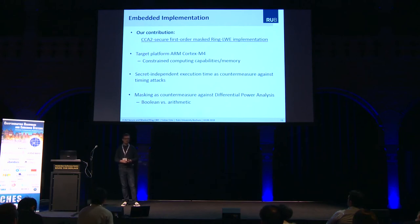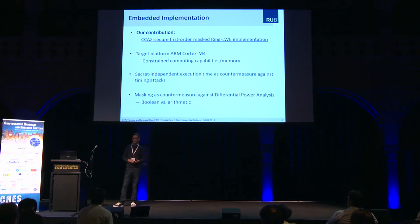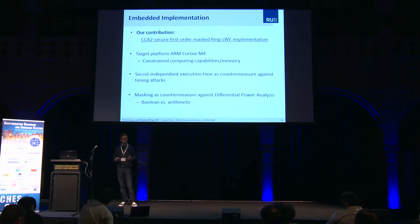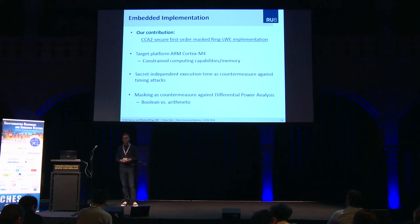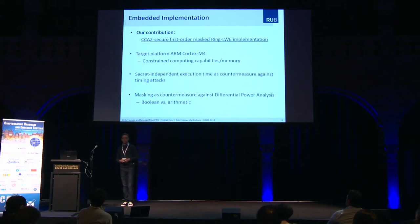You already heard a few things about masking countermeasures earlier today. For this work, boolean and arithmetic masking are relevant. Masking means that you split a secret value into multiple shares, and then you have to recombine these shares to get back the secret value. If you don't have access to all the shares, you cannot recombine them. The difference between boolean and arithmetic masking is basically the way in which you combine these shares: for boolean masking you apply the XOR operation, and for arithmetic masking you do modular addition.